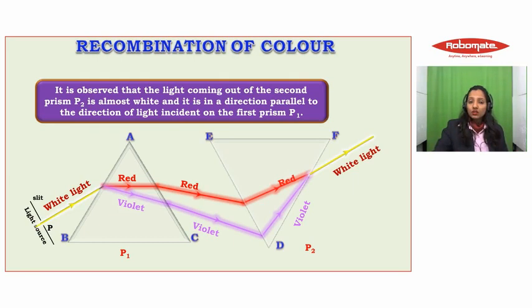First, white light was falling on prism P1, then it got dispersed into its seven constituent colors. These colors were made to fall on another prism, which recombined all the colors, and again white light was given out of prism P2.